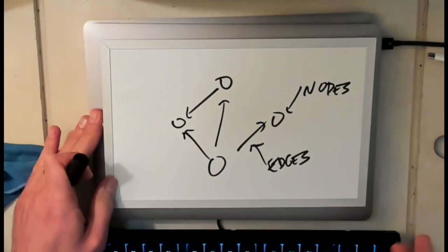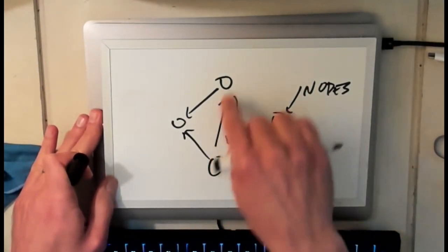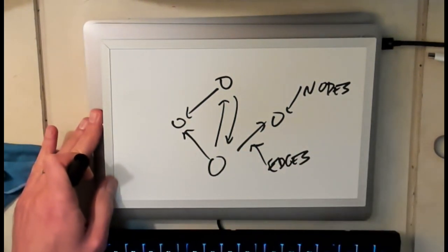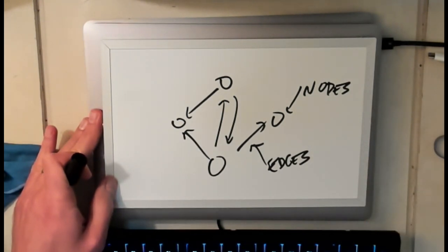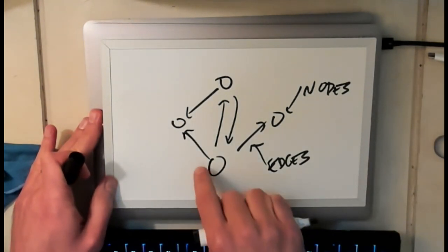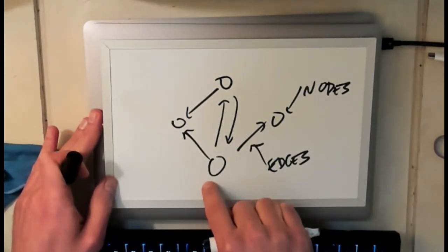So this is now what's called a directed graph. I can still have two nodes that are both connected in both directions but I'm representing those connections differently. So I'm representing a connection in one direction differently than the connection in another direction to allow me to represent the fact that in this case, for example, I can move from this node to this node but I can't travel in the reverse direction.